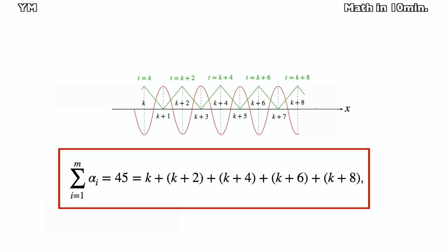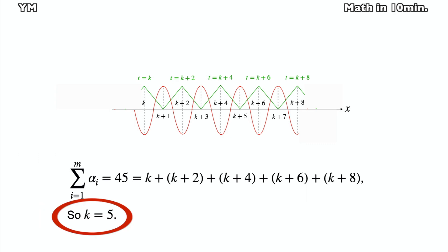So k plus k plus 2 plus k plus 4 plus k plus 6 plus k plus 8 equals 45. And then we get k equals 5.